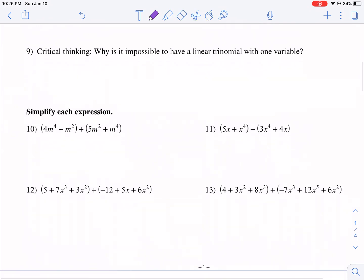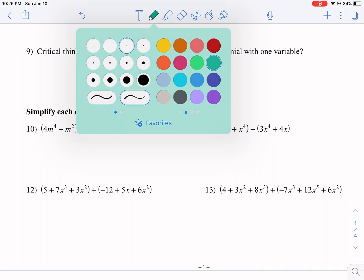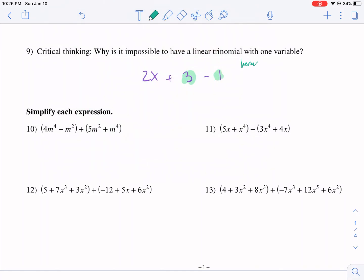Let's move on. Critical thinking. Why is it impossible to have a linear trinomial with one variable? Well, if it's saying just one variable, so we've had like 2x + 3, and there's no other variables you can write. Well, that would mean you need a third term, like minus one. And then what happened is these would combine. So I guess you could say something like, because like terms would combine.